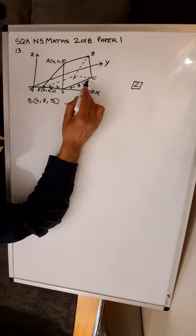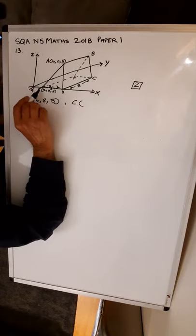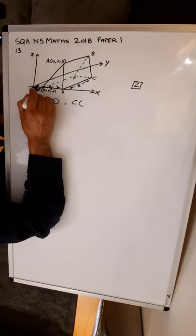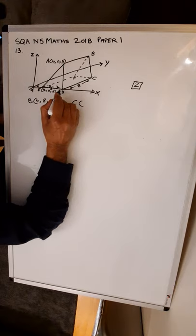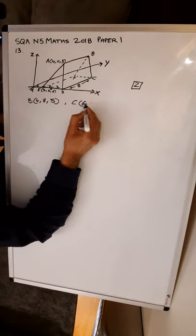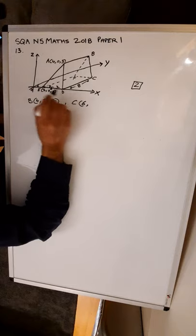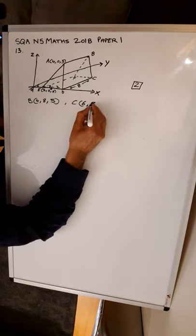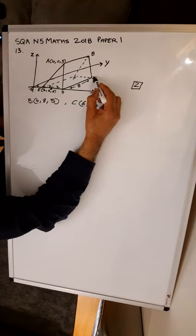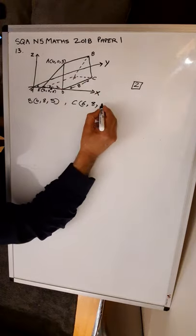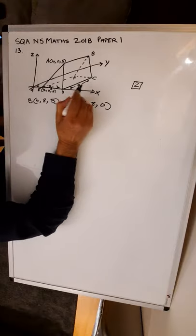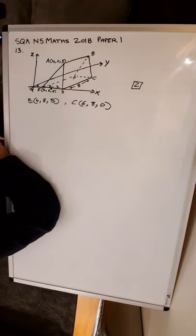For C: if this is 2, this will be 4, and this will be 6 — you're just adding 2 each time. So the x-coordinate of C is 6, 6 along the x-axis. The y-coordinate is 8 again, parallel to the y-axis. You're not going up parallel to the z-axis, so the z-coordinate is 0. C is in the xy-plane.